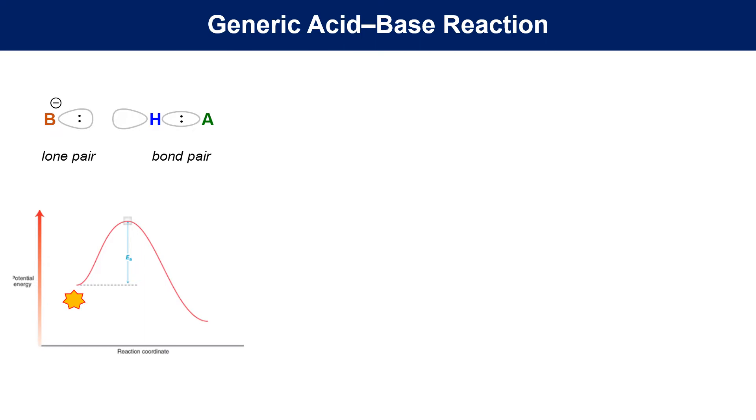The base then donates its lone pair to the antibond of the HA bond, temporarily destabilizing the system as the materials transition towards products. The transition state is a theoretical picture of what the system looks like at the highest energy point. Completion of the BH bond and the HA bond breaking results in products, with the original lone pair now being a bond pair and the original bond pair now a lone pair.